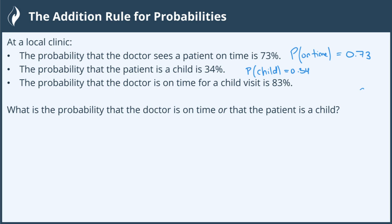The probability that the doctor is on time for a child visit. So that's kind of the intersection, right? The probability that he's on time, and it's a child. The probability of both is 83%, 0.83. Okay, so this is like the intersection of the two, where they're both happening at the same time.